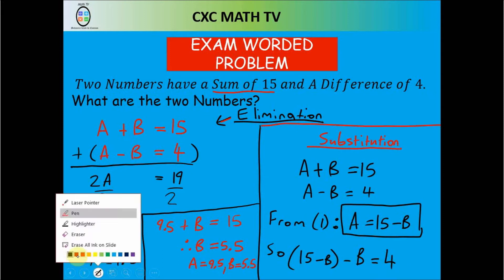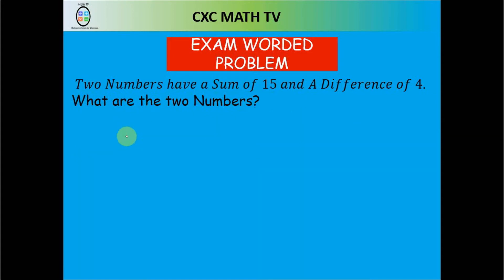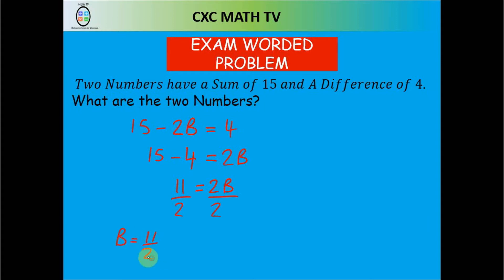Expanding: minus b minus b gives minus 2b, so we get 15 minus 2b equals 4. Bringing the 2b to one side and 4 to the other: 15 minus 4 equals 2b, which is 11 equals 2b. Dividing both sides by 2, b equals 11 over 2, or 5.5.